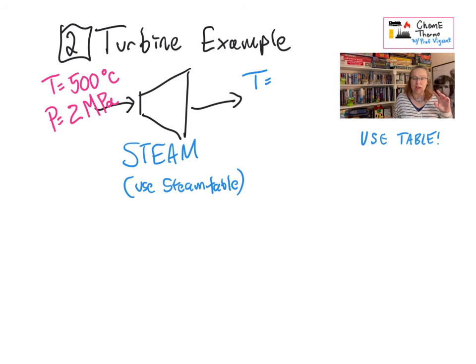Coming in, let's assume we have a temperature of 500 degrees C and a pressure of 2 mega pascals. Coming out, we're going to have a temperature of 300 degrees C and a pressure of 0.5 mega pascals.